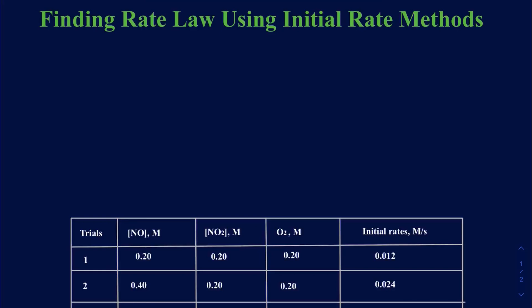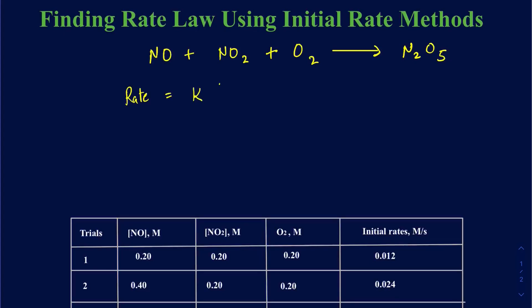Suppose we have this reaction where NO reacts with NO2 and O2 to make N2O5. This reaction seems to be already balanced — one coefficient for each reactant and one for the product. When writing the rate law, we'll have rate constant K, the concentration of NO to some power X, the concentration of NO2 to some power Y, and the concentration of O2 to some power Z.